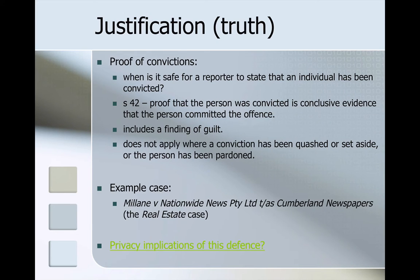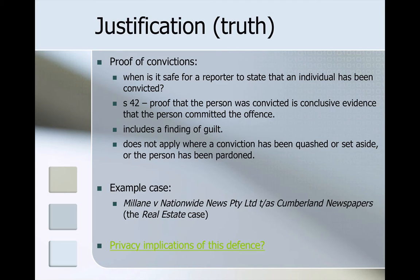One particular aspect to consider relates to the publication of convictions — when is it safe for a reporter to state that an individual has been convicted of a crime? The relevant section is section 42, and there must be proof that the person was convicted, which is conclusive evidence that the person committed the offence — this includes a finding of guilt. It does not apply where a conviction has been quashed or set aside, or if the person has been pardoned. A second specific matter comes from the case of Millane and Nationwide News Limited trading as Cumberland Newspapers, which is considered in the textbook.